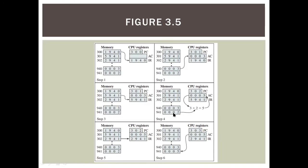Then we go to step 4 to change the value of AC. Because the opcode is 5 (add), we compute 3 plus 2 equals 5, and we get 5 stored as the new AC value.